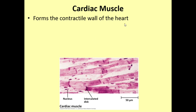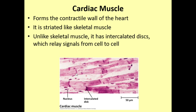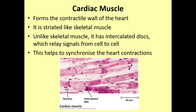Cardiac muscle makes up the heart. It is striated, though differently from skeletal muscle — it has thicker bands called intercalated discs. These relay signals from cell to cell, enabling communication between individual cardiac muscle fibers, which is important because the contractions of the heart need to be synchronized to pump blood around the body effectively. So we have striated or skeletal muscle, smooth muscle, and cardiac muscle as our three types of muscle tissue.